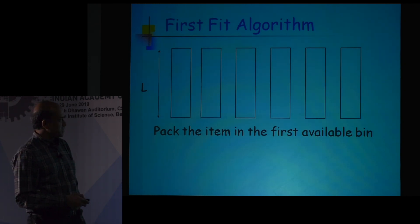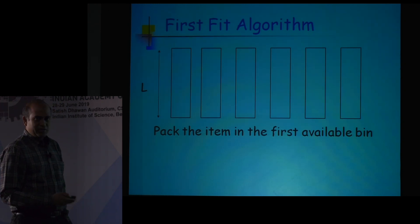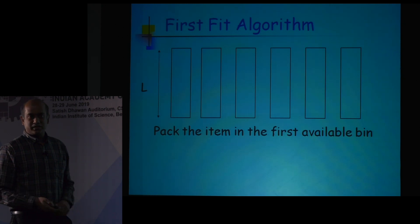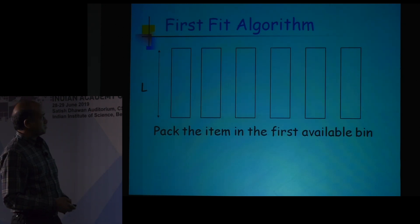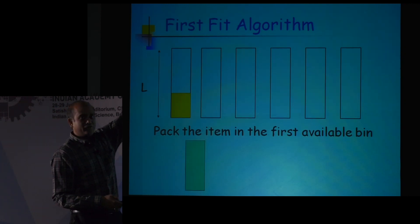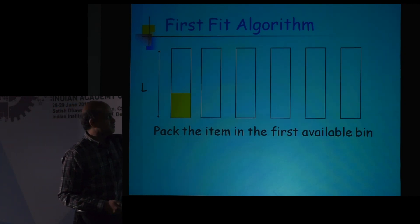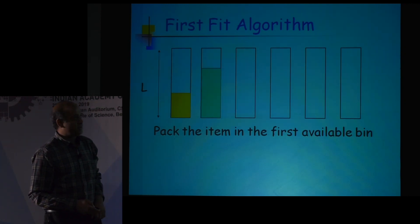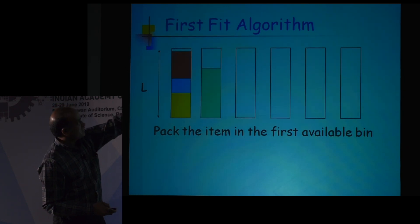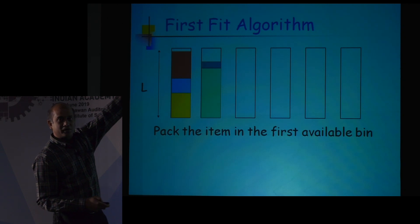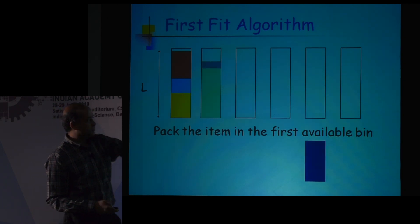The first fit algorithm says: whenever an item comes, do the most natural thing — pack it in the first available bin. So a yellow item comes, you pack it here; the next green item cannot fit in the first bin, so you put it in the second bin; the next one goes back to the first bin; and so on.